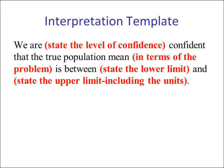This is our interpretation template. When we estimate the population mean using a confidence interval, we start by saying 'We are' then state the level of confidence — either 90%, 95%, or 99%, which will be given in the problem — then say 'confident that the true population mean' in terms of the problem, 'is between' the lower limit 'and' the upper limit, including the units.